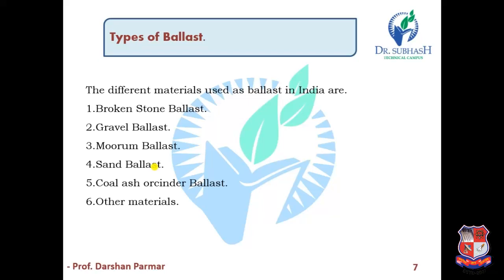The sixth type is other materials. Other materials used as ballast include brick ballast, black ballast, cinder ballast, blast furnace slag ballast, and earth ballast. So these are the different types of ballast.